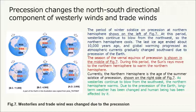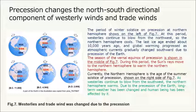Precession changes the north-south directional component of westerly winds and trade winds. The period of the winter solstice of precession in the northern hemisphere shows westerlies continuing to blow from the northwest, so the northern hemisphere cools. The last ice age ended about 10,000 years ago, and global warming progressed as atmospheric currents gradually changed southward due to precession. During the vernal equinox phase of precession, the sun's rays move to the northern hemisphere, warming it. Currently, the northern hemisphere is in the summer solstice phase of precession, where westerlies continue to blow from the southwest, warming the northern hemisphere. Due to the precession of the Earth, long-term weather has changed and human beings have been affected by it.